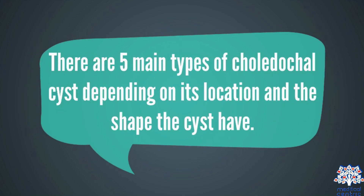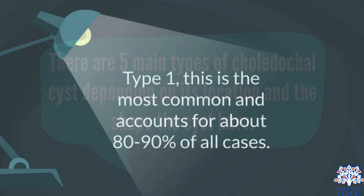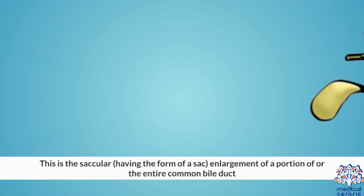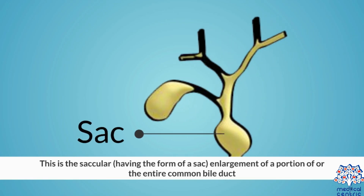There are five main types of Choledocal cyst depending on its location and the shape the cysts have. Type 1 is the most common and accounts for about 80-90% of all cases. This is the saccular — having the form of a sac — enlargement of a portion of or the entire common bile duct.